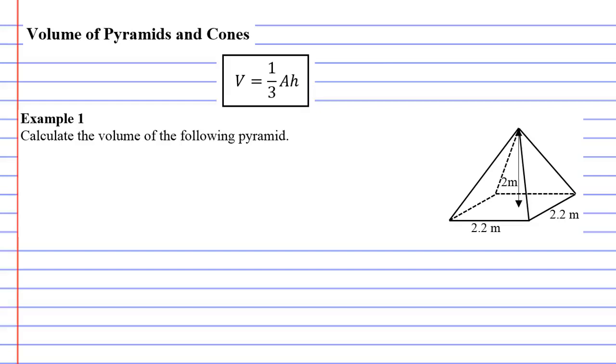Example 1. We're going to find the volume of this pyramid here and we're going to use the formula one third times area times height.